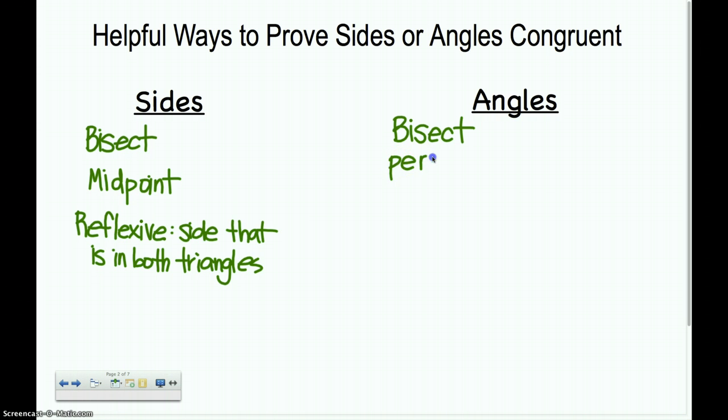Perpendicular lines. Perpendicular lines make right angles. All right angles are congruent. If you have perpendicular segments or perpendicular lines, look at the angles. Can you use them? Because if you can, right angles are always congruent. Which means, anytime you see right angles, a little helpful hint for you right there. Right angles are always congruent. If it says right angle, boom, you're done.